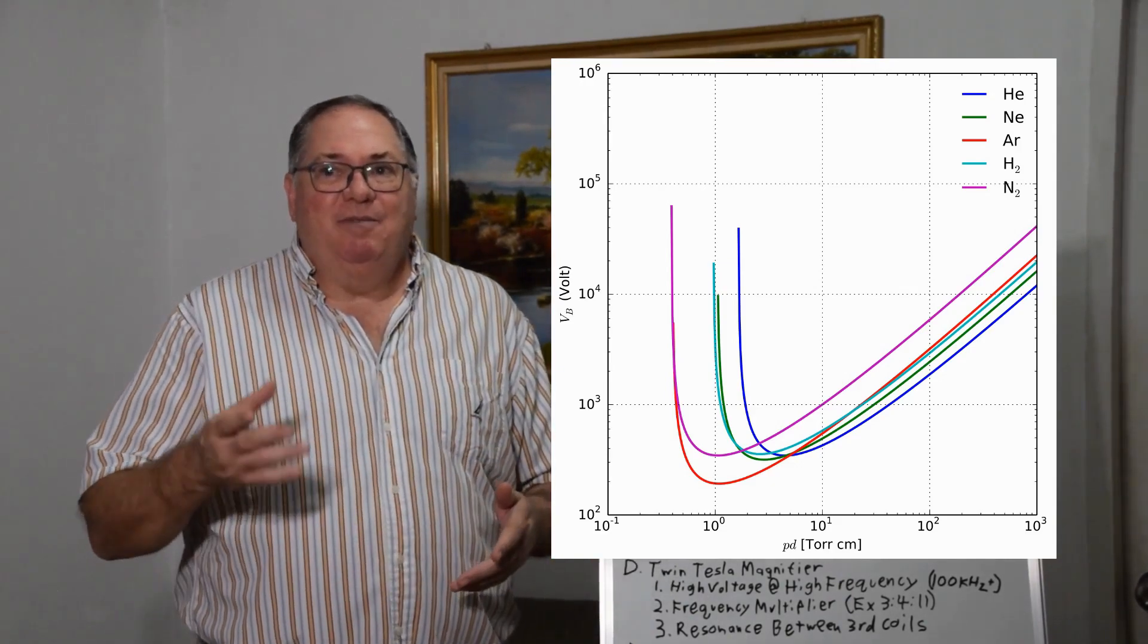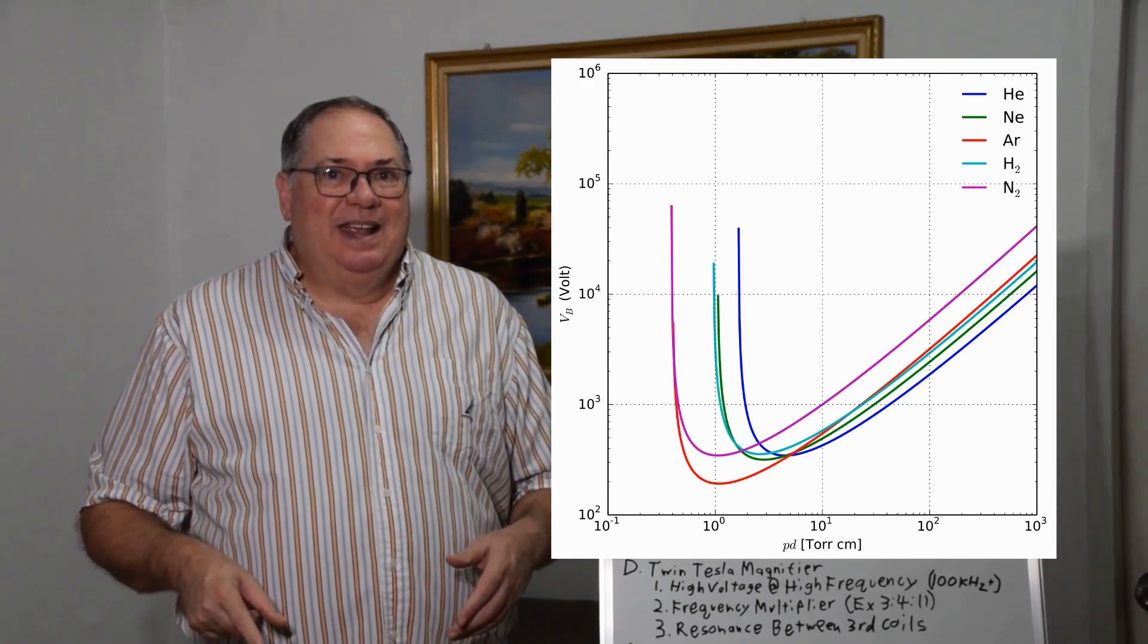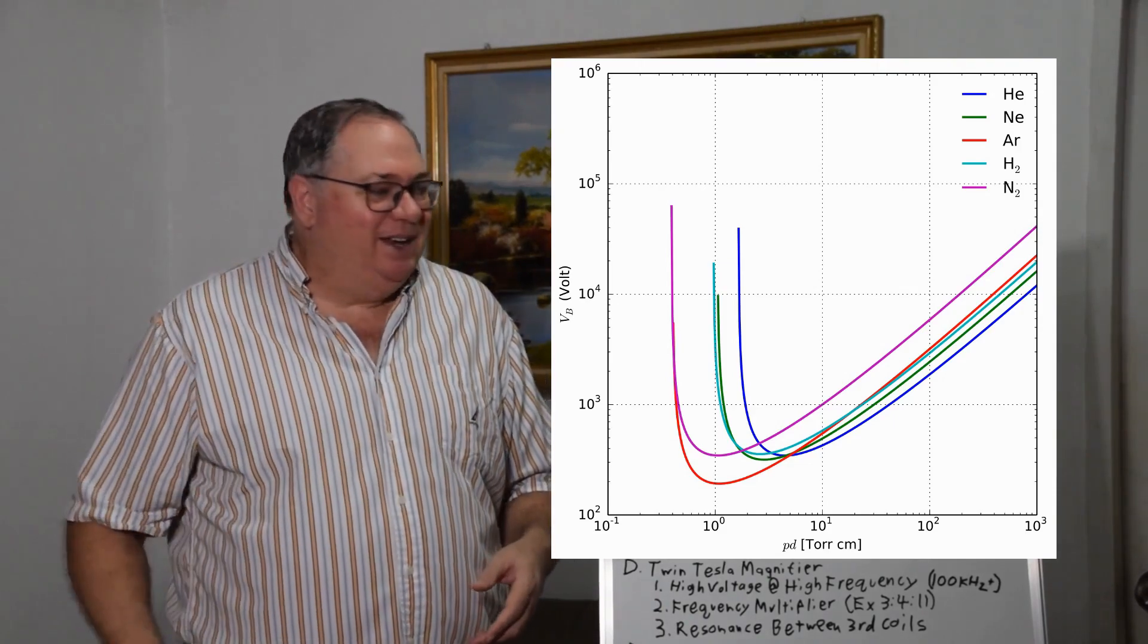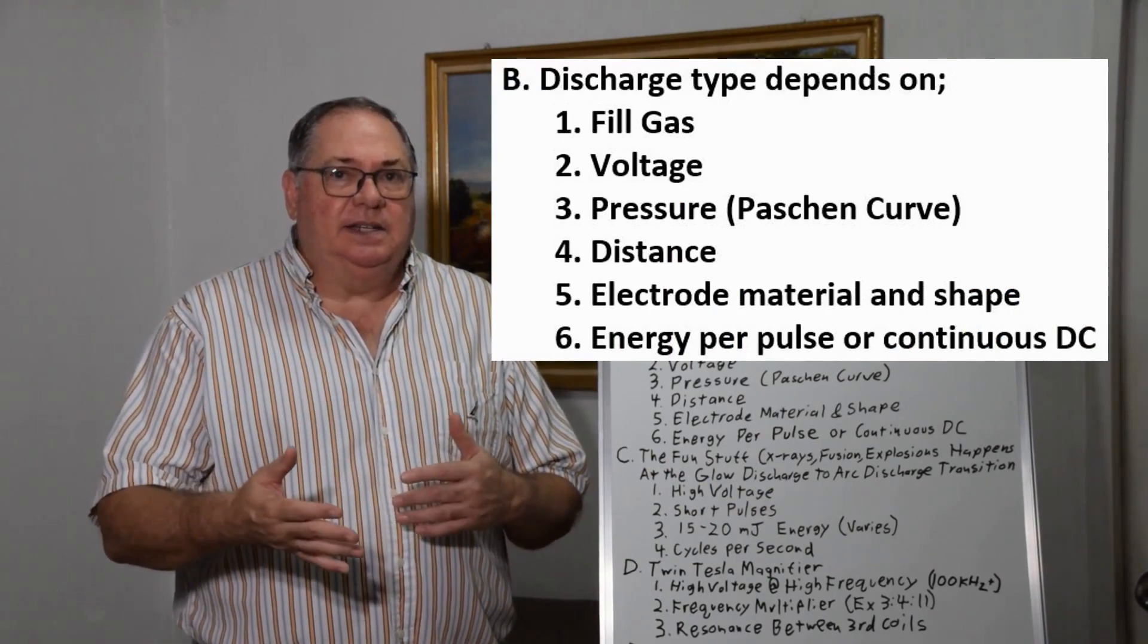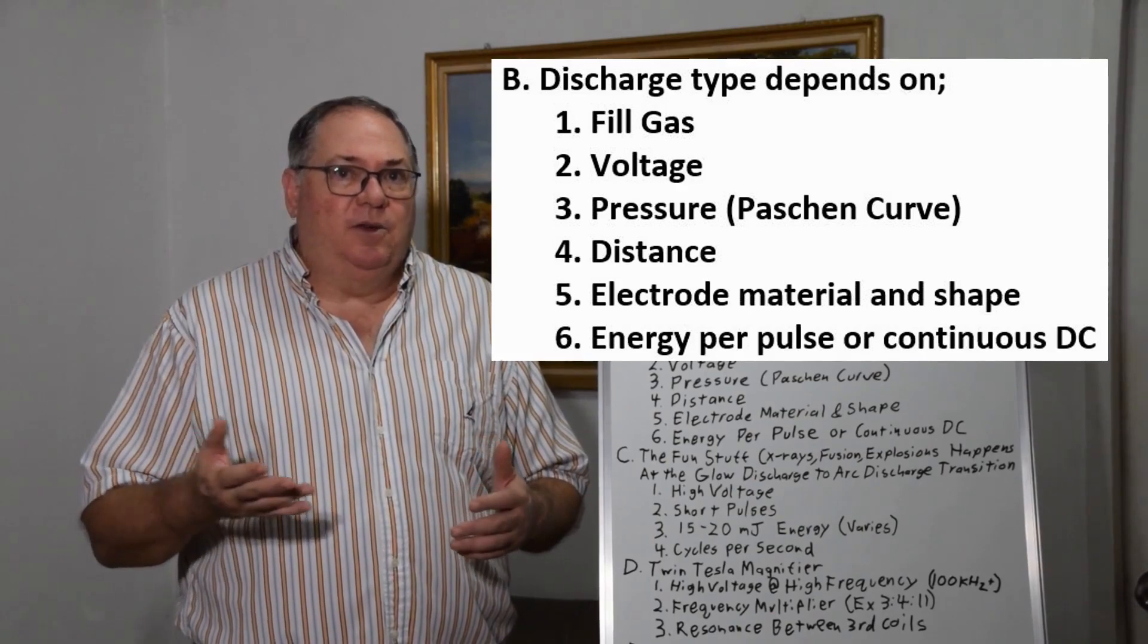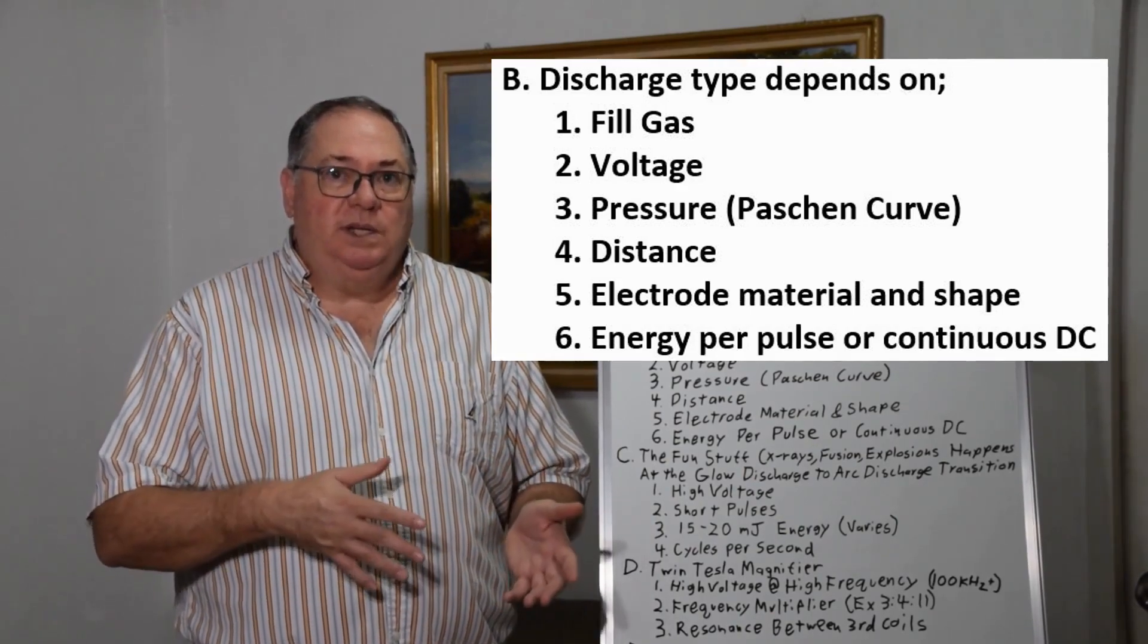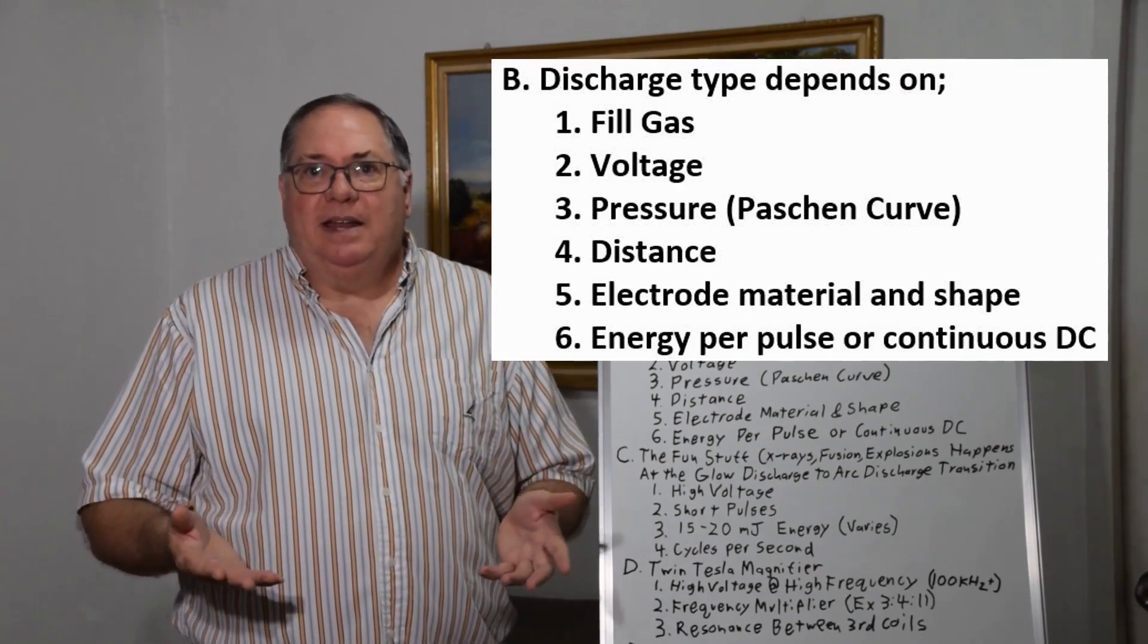Distance is also important. The breakdown in dry air is about 30 kilovolts per centimeter, while in moist air with higher humidity it can drop to around 8 kilovolts per centimeter.